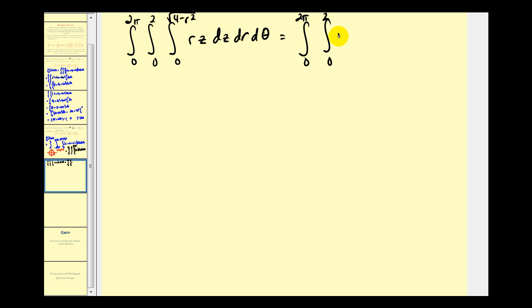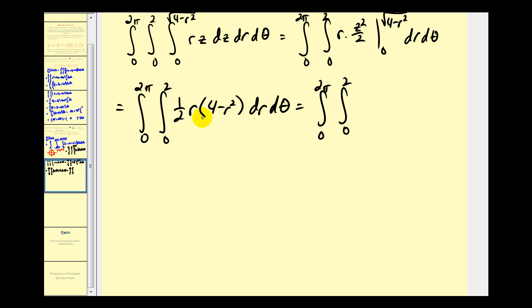Let's evaluate this on the next page. Integrating with respect to Z, we have R times Z squared over two. Replacing Z with the square root of four minus R squared, we have one-half R times four minus R squared. When Z is zero, we'll have zero. Let's distribute here. We're going to have two R minus one-half R cubed.